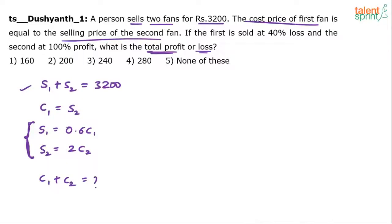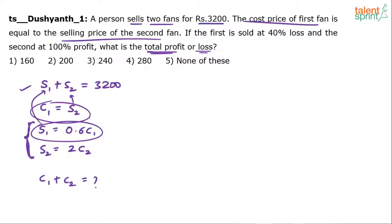The only equation with a number is the first equation, so it plays a key role. We know S1 plus S2 equals 3200. Now substitute S2 equals C1 and S1 equals 0.6 C1. Since C1 equals S2, S1 equals 0.6 C1 becomes 0.6 S2. So I can write S1 as 0.6 S2.